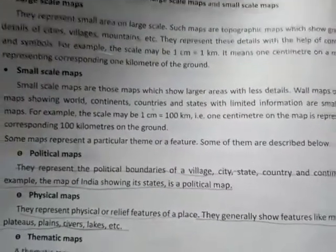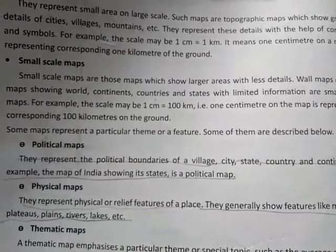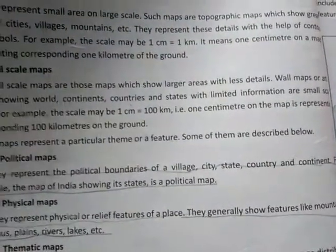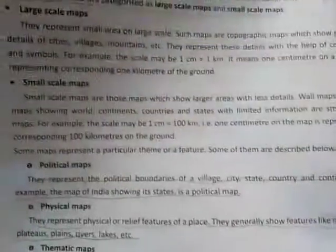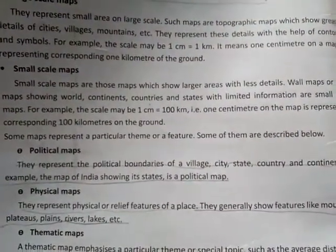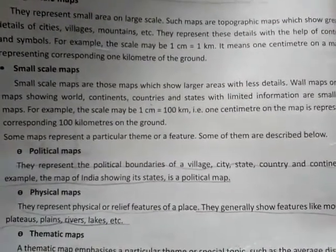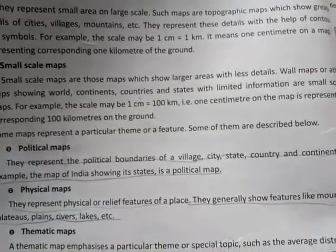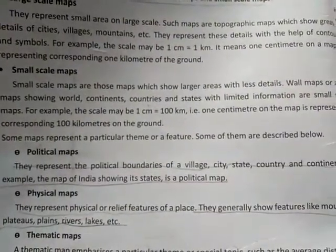Then we have small scale maps. Small scale maps show larger areas with fewer details. For example, a map of India showing only the division of states — wall maps or atlas maps showing the world, continents, countries, and states with limited information are small scale maps. The scale could be one centimeter equal to hundreds of kilometers, so one centimeter on the map represents one hundred kilometers on the ground.